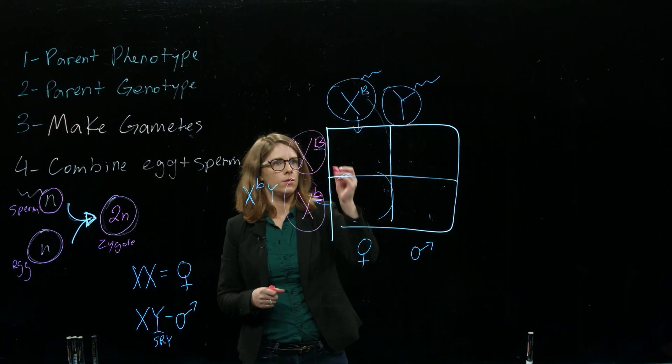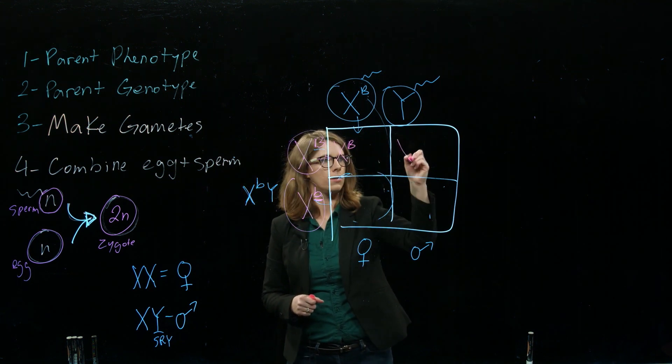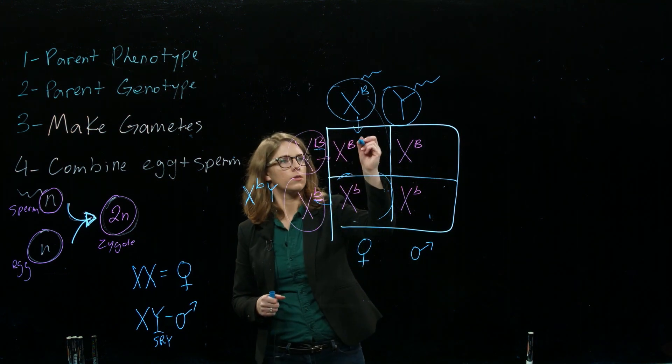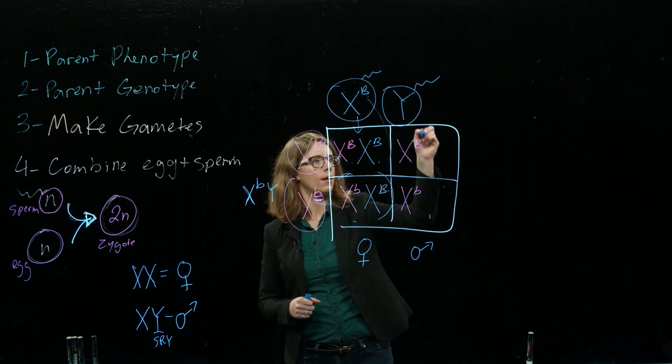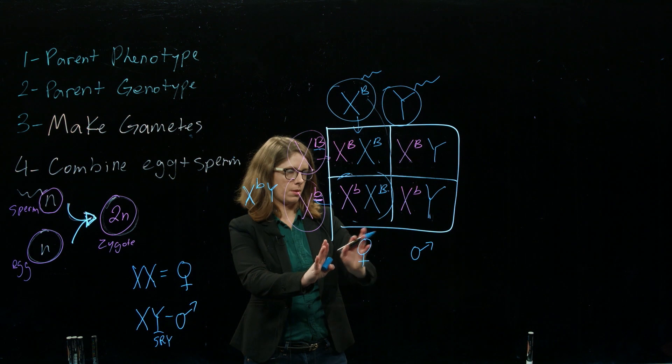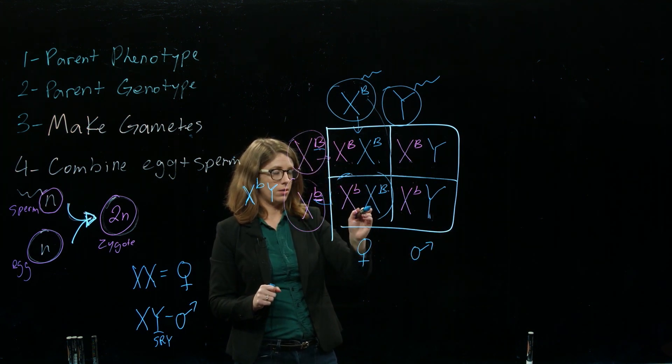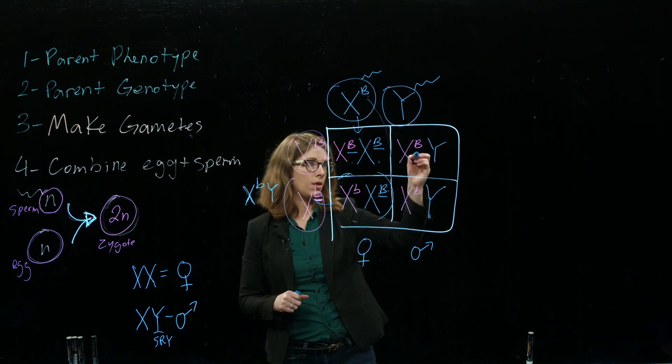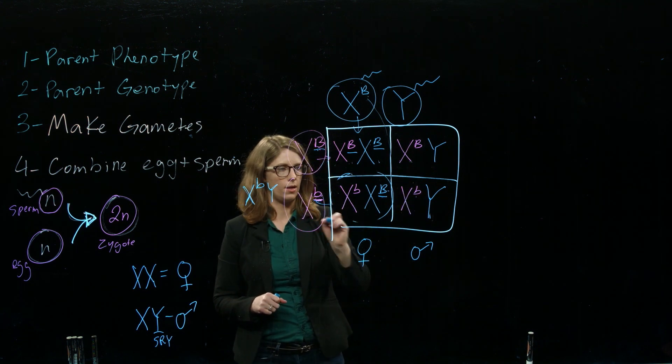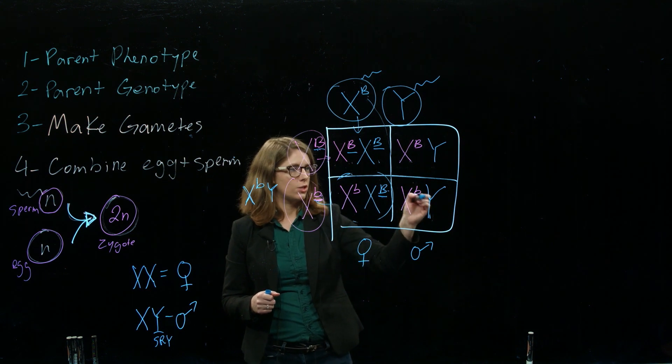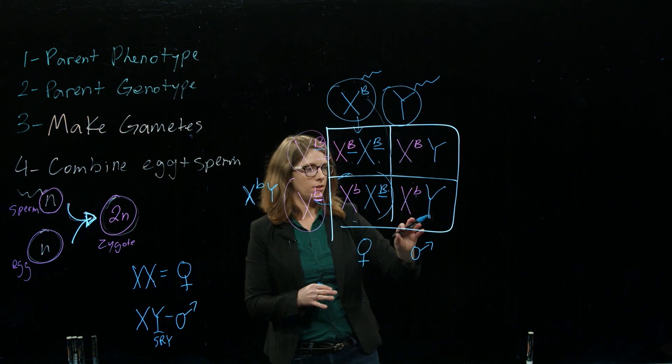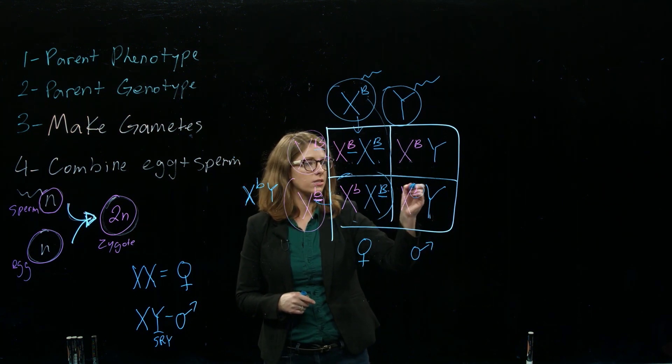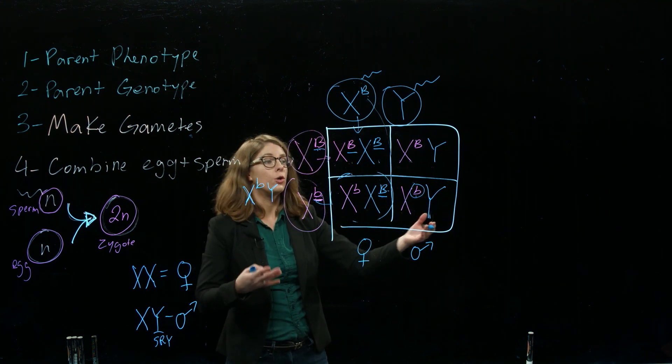Let's do the same thing, bring them down and across. The daughters are probably on the left, sons on the right. Are the daughters colorblind? No, they have at least one, in some cases two, dominant alleles, so they have normal color vision. But the sons, half will get the big B from mom, half will get the little b from mom. That's where sons get their X chromosomes from—from mom. So there's a 25% chance of having a colorblind kid. Looking just at sons, it's 50%. This is why colorblindness disproportionately affects males—they only got one chance to get that dominant allele.